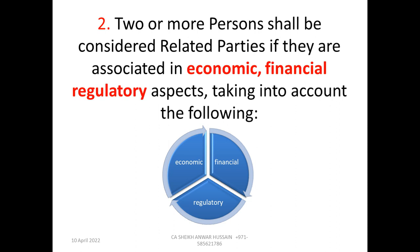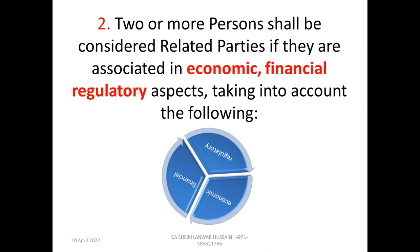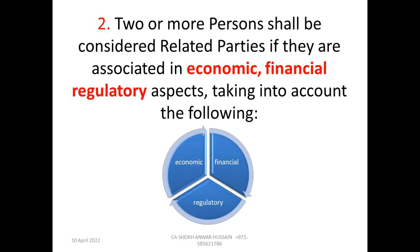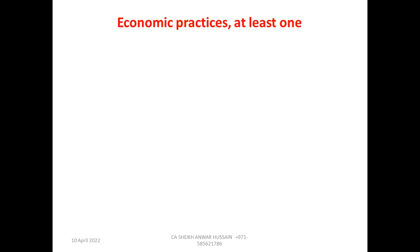If Clause 1 is not satisfied, then we come to Clause 2. Clause 2 says: two or more persons shall be considered related parties if they are associated in economic, financial, and regulatory aspects, taking into account the following. They have to satisfy all three — economic, financial, and regulatory aspects.